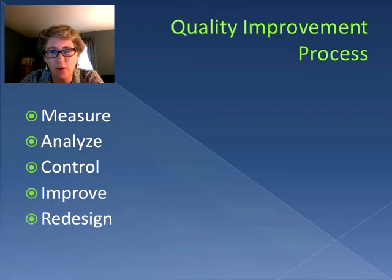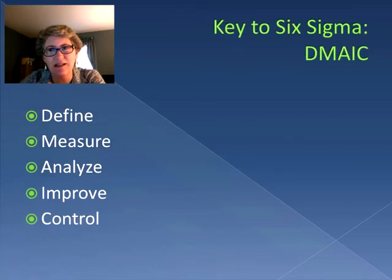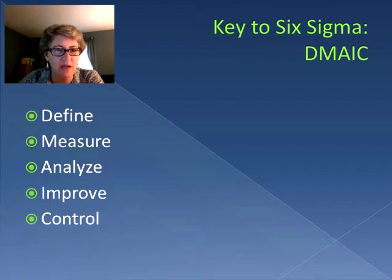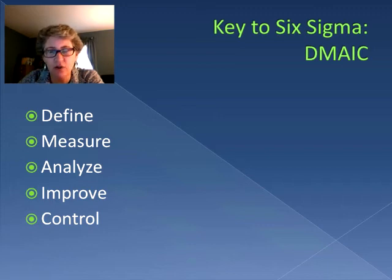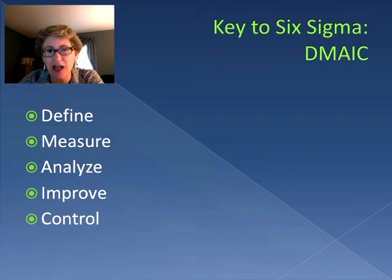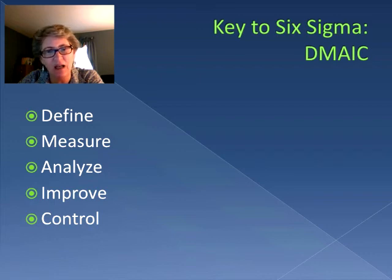So how do we go about doing this? This is where we start talking about Six Sigma. The key to Six Sigma is something called DMAIC, which stands for Define, Measure, Analyze, Improve, and Control. If we're going to make any changes to a process, we need to define the problem, measure things so we can collect all of our variables, analyze them, then make our improvement, and then control and monitor it to make sure the process is staying in the improved mode. That's the key to Six Sigma.